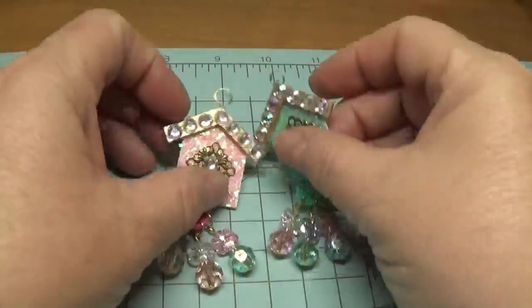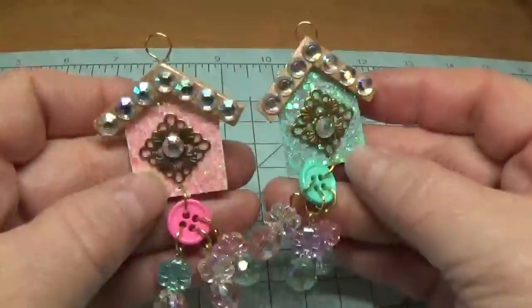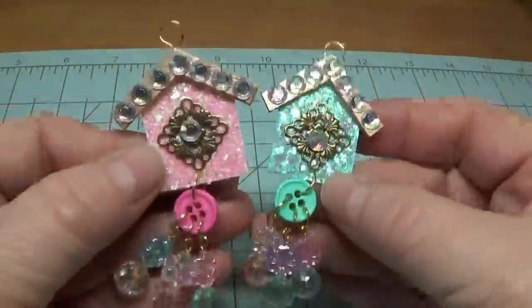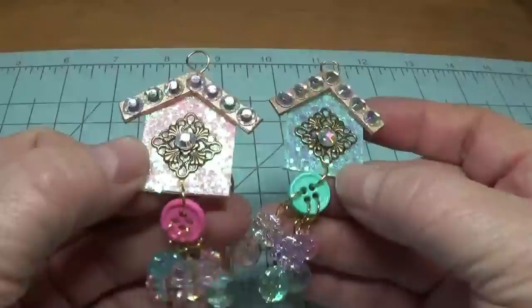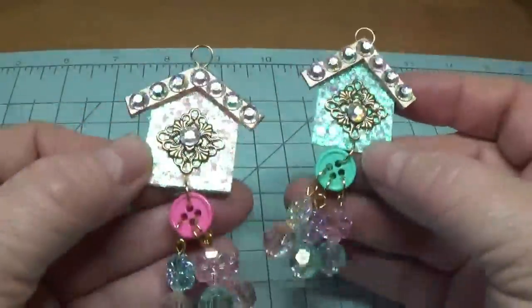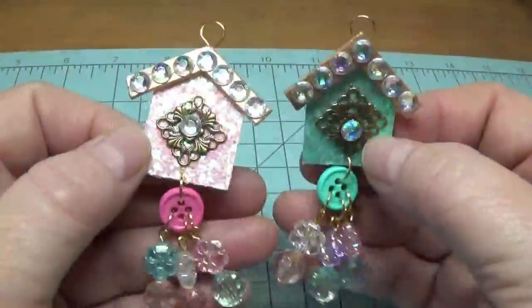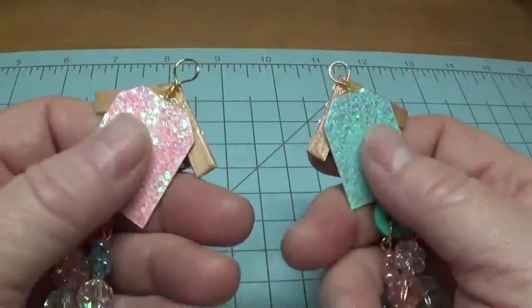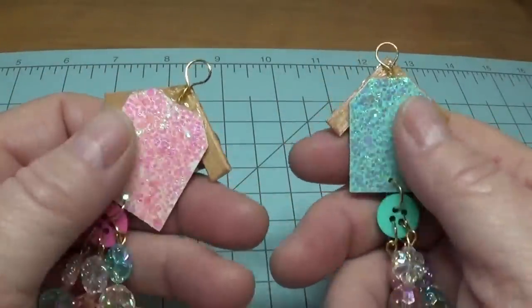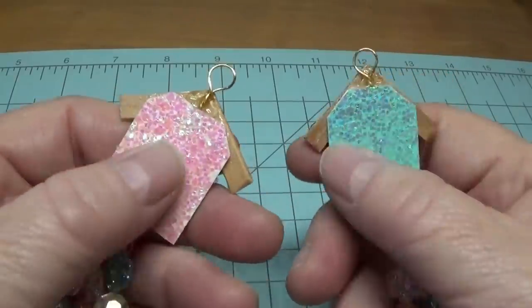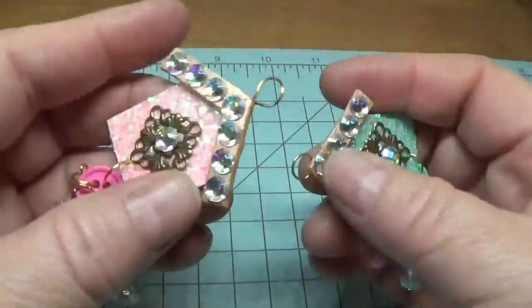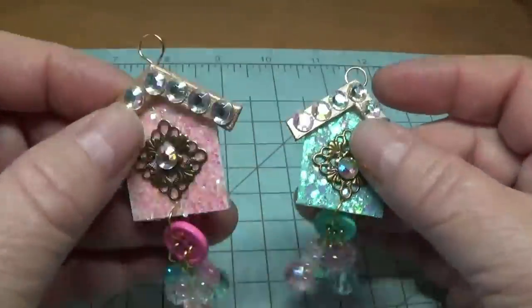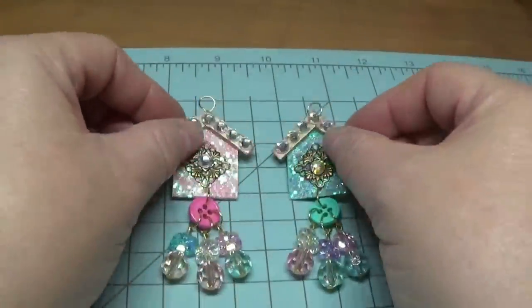Hi, this is Happy Bird from HappyBirdsGlitterNest.blogspot.com, and today I'm going to show you how to make these beautiful little lightweight acrylic birdhouse charms. You can use these on a number of projects. These were super simple to put together, very sturdy, and the glitter is already on there for you. You don't have to use any glitter in this project. Stay tuned, and I'll show you how to put these together.